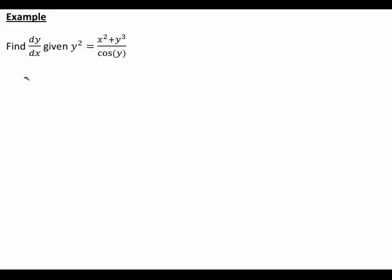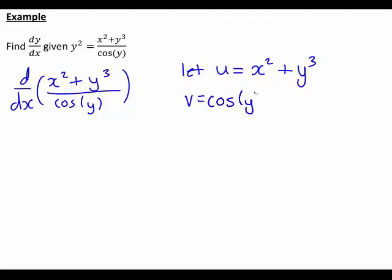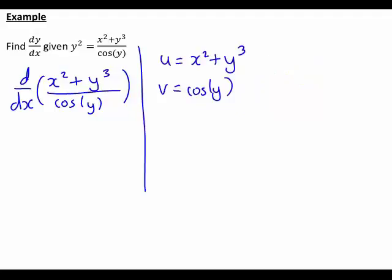We want to find the derivative with respect to x of x squared plus y cubed divided by cos y — that's the entire right hand side. We need to use the quotient rule here. So we let u equal the numerator, which is x squared plus y cubed, and v equal the denominator, which is cos y. Now let's think about the derivative of each of those with respect to x.